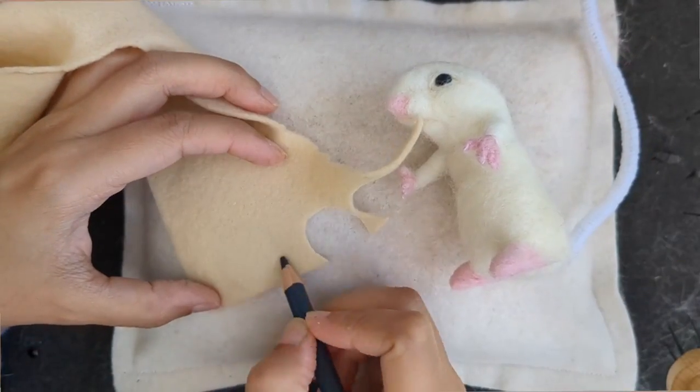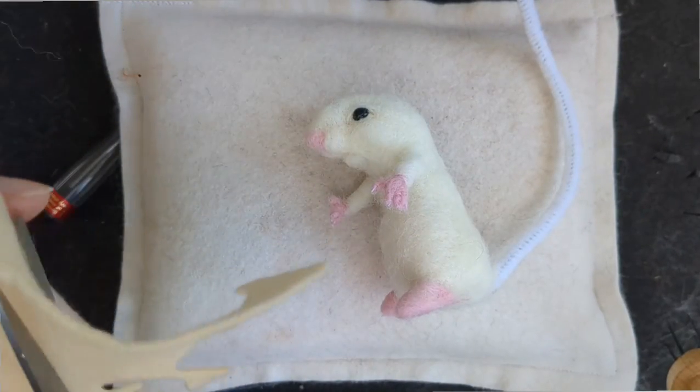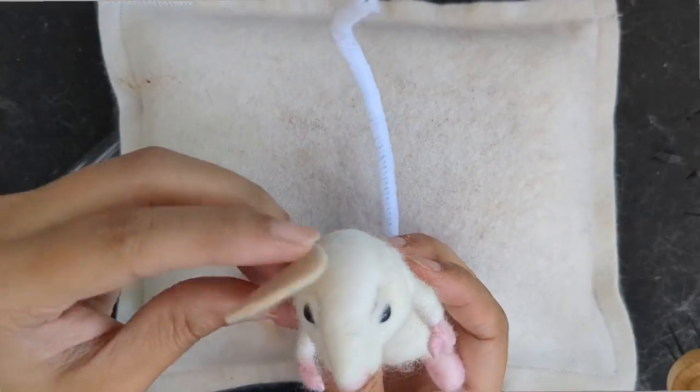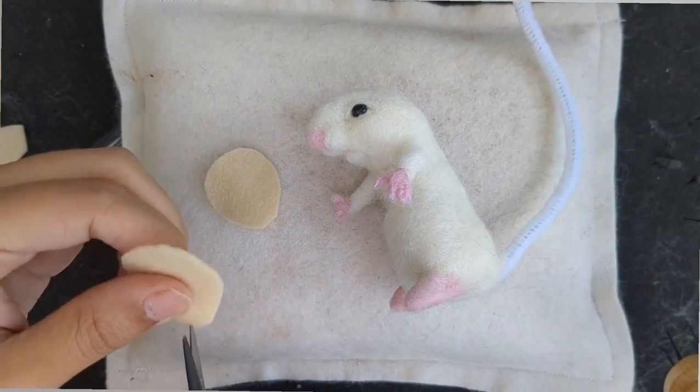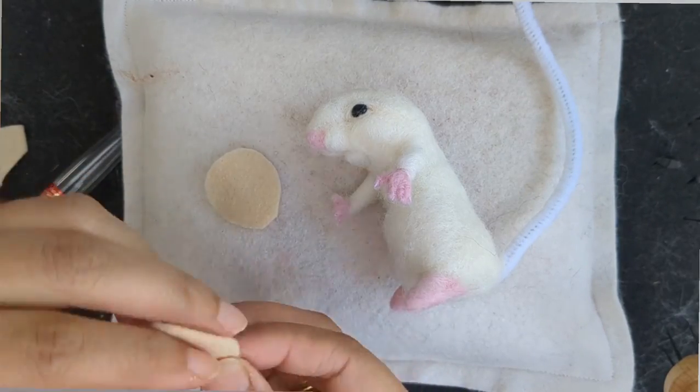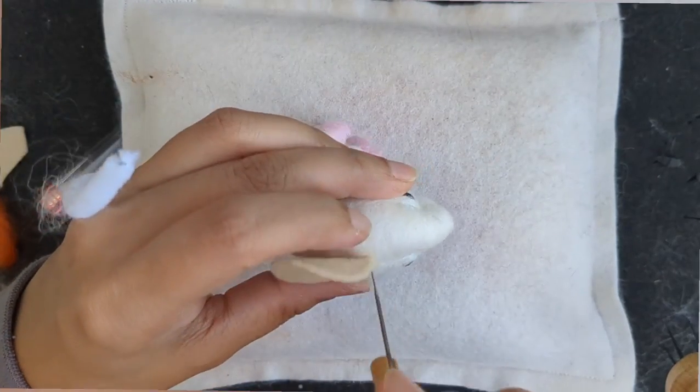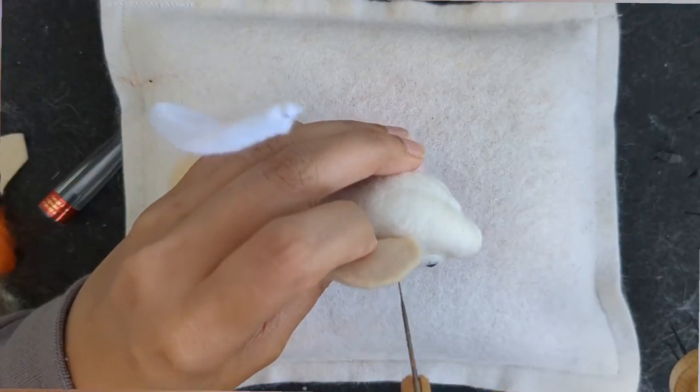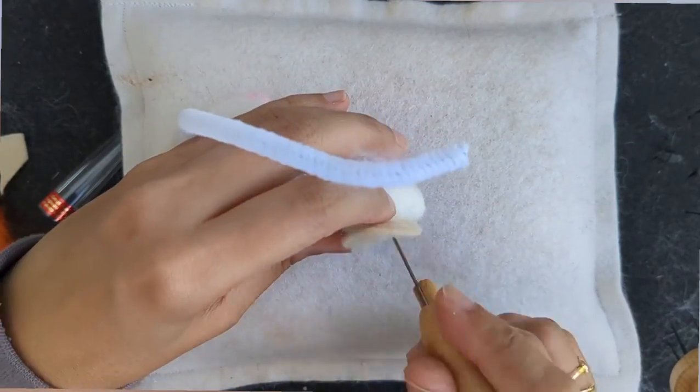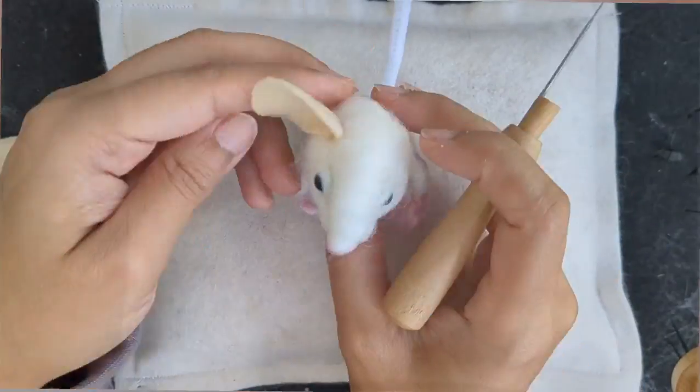I'm going to use some felt sheet for the ears. So I'm just going to draw ears that are big enough for the head. I'm going to cut it out, make two of them. I'm just going to try and phase out the end of it so it's easier to attach. I'm going to fold it a bit and just felt it down. You can make your own ears but I think the felt sheet works as well.